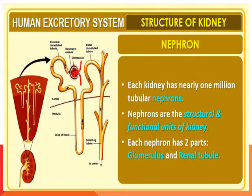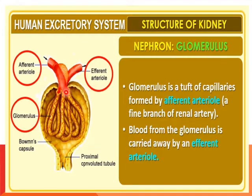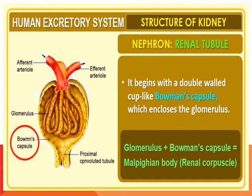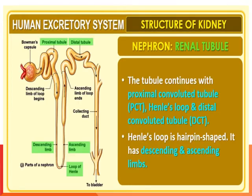The structural and functional unit of the kidney, present in millions in each kidney, is known as the nephron. The nephron has two parts: the glomerulus and the renal tubules. The glomerulus is a tuft of capillaries formed by the afferent and efferent arterioles. Blood from the glomerulus is carried away by the efferent arteriole. It begins with a double membrane wall cup-like structure known as Bowman's capsule, which encloses the glomerulus. Glomerulus plus Bowman's capsule equals the Malpighian body or renal corpuscle. The tubules continue with the proximal convoluted tubule, Henle's loop, and the distal convoluted tubule. Henle's loop has descending and ascending limbs with a hairpin-like structure.